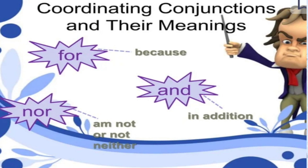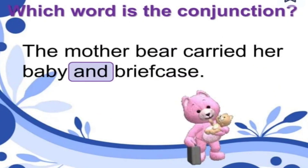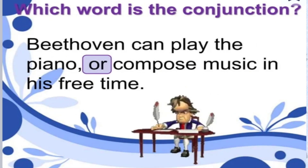Example of 'nor': 'He does not eat cake, nor does he eat biscuits.' Practice: 'The mother bear carried her baby and brave cub.' The conjunction here is 'and,' used for adding similar information or ideas. Second example: 'Ben with one can play the piano or compose music in his free time.' 'Or' connects both options — used to connect different possibilities.